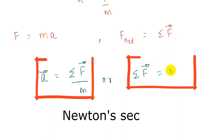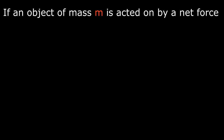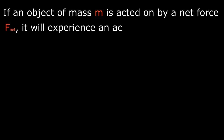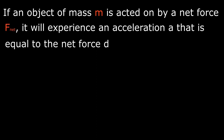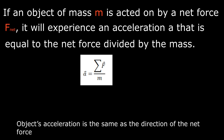Newton's formal statement: if an object of mass m is acted on by a net force F_net, it will experience an acceleration equal to the net force divided by the mass. Since the net force is a vector, acceleration is also a vector, and the direction of the object's acceleration is the same as the direction of the net force.